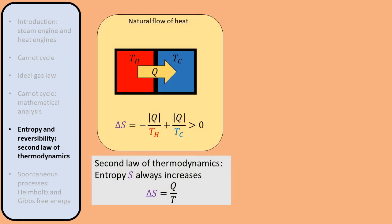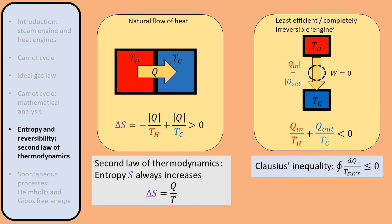According to the second law of thermodynamics, entropy increases, and the change in entropy is defined as the heat flow divided by the temperature. We also know that according to Clausius' inequality, the sum of heat flows divided by their temperatures over a cycle is less than or equal to zero. At first sight this seems like a contradiction, but the reason is that in Clausius' inequality we don't look at the entropy change of the reservoirs — only the engine in between. Moreover, we divide by the temperature of the surrounding reservoirs, not the engine itself. Therefore, the second law and Clausius' inequality don't contradict each other.